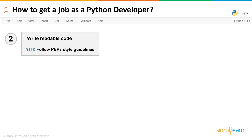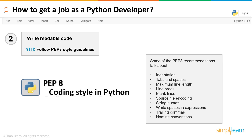The most important guideline is the PEP 8 style guideline for Python. PEP 8 covers conventions around indentation — a four-space indentation, tabs and spaces, a maximum line length of 79 characters per line, line breaks and blank lines (every major class or function should be separated by two blank lines), source file encoding, string quotes, white spaces in expressions, trailing commas, naming conventions, and so on. For variables, make sure the variable name shows what the variable stores and what it is used for.